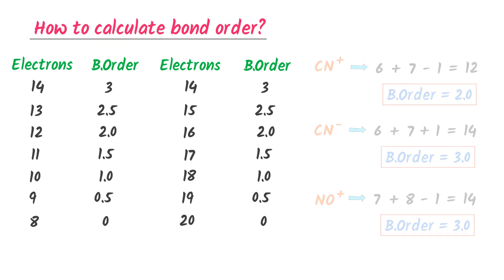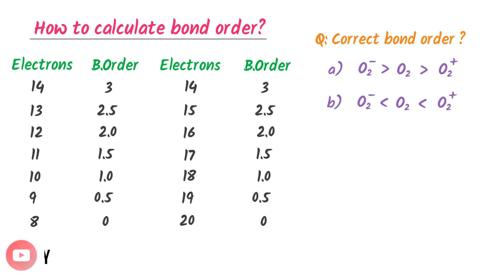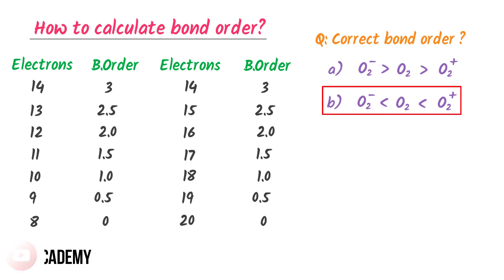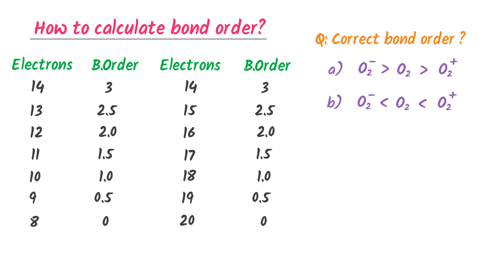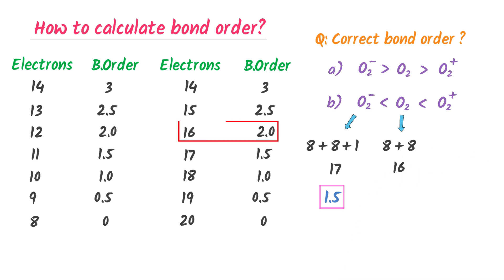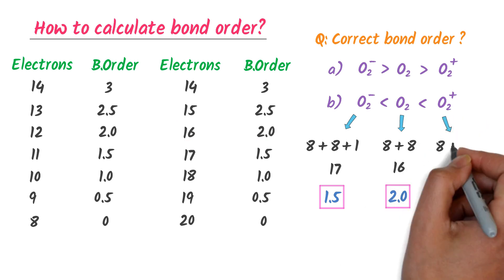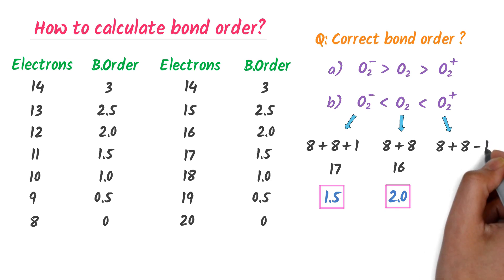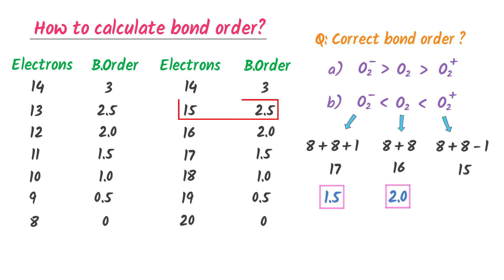Finally, let me teach you two exam questions. The correct bond order is either option A or option B. Let me check option B. Two atoms of oxygen: 8 plus 8. I change the sign of negative one to positive one — I get 17 electrons, so bond order is 1.5. For O₂: 8 plus 8 equals 16, bond order is 2.0. For O₂⁺: 8 plus 8, I change positive one to negative one — I get 15, bond order is 2.5. We can see 2.5 > 2.0 > 1.5, so the correct option is B.